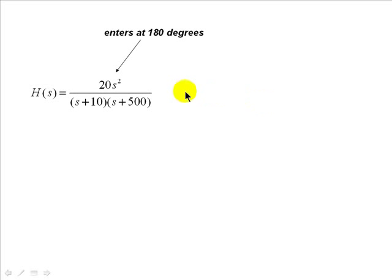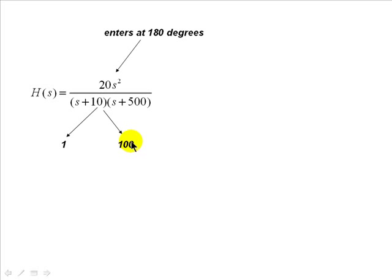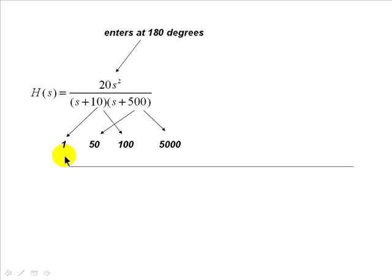For the phase Bode plot, the two zeros at zero tell us that the curve enters horizontally at 180 degrees. Each one of those two simple poles will include two knees: for the pole at 10, one decade before at 1 and one decade after at 100. And the same for the 500 radians per second pole — at 50 and 5000. We mark on an axis, not up to scale, those four frequencies: 1, 50, 100, and 5000 radians per second.